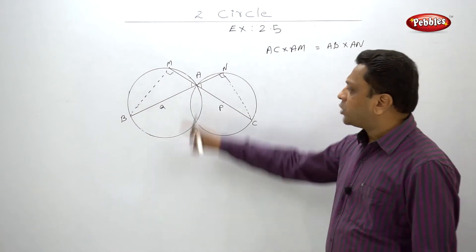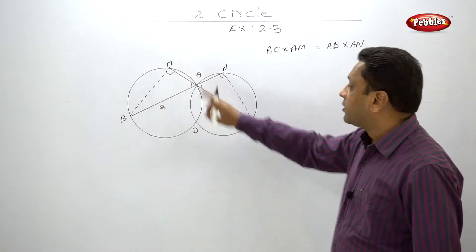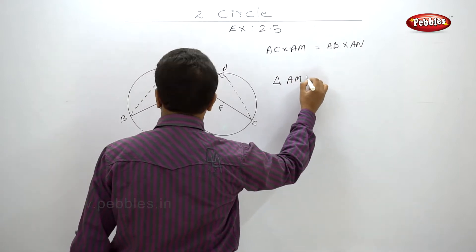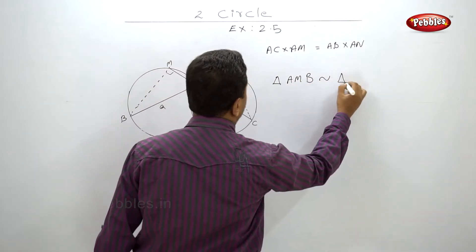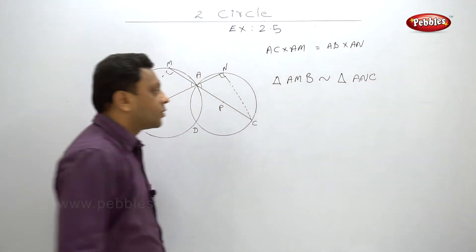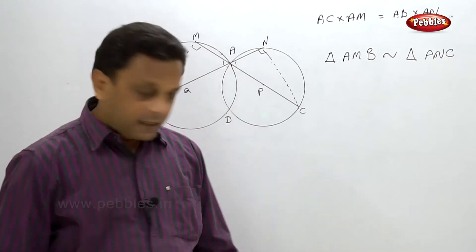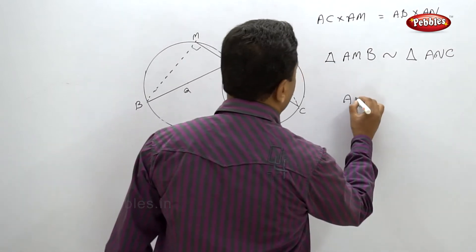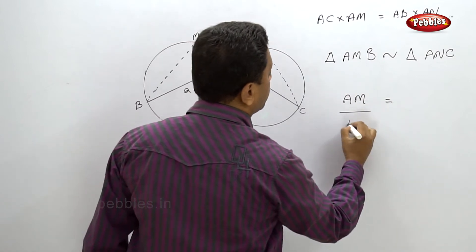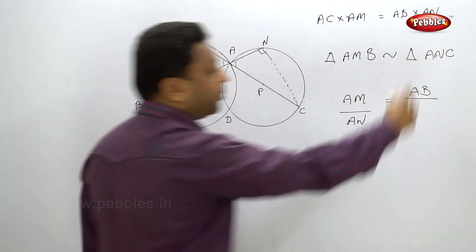I will start from the common point A and go to the right angle point. Triangle AMB is similar to triangle ANC, by the AA test of similarity. And hence AM upon AN equals AB upon AC.